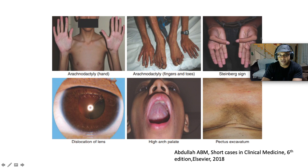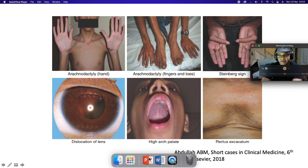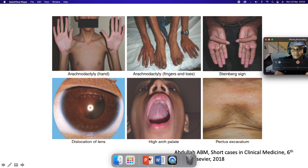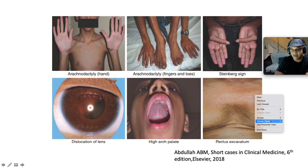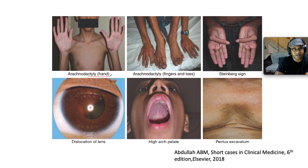Here we find in the first picture on the left, arachnodactyly — the spider-like long fingers. The next image shows arachnodactyly involving both the fingers and the toes. Note how long they are. This is the Steinberg sign, which is what we call the thumb sign. This next image shows dislocation of the lens, the high arch palate, and pectus excavatum.